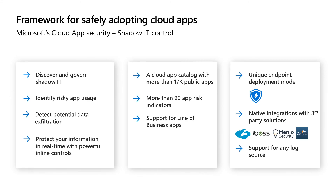Microsoft Cloud App Security is positioned to help organizations discover and identify risky usage and potential exfiltration, and ultimately protect your organization with powerful controls. We do this by maintaining a mapping of more than 17,000 public applications, each with more than 90 risk indicators, and enabling expansions to your line-of-business apps.